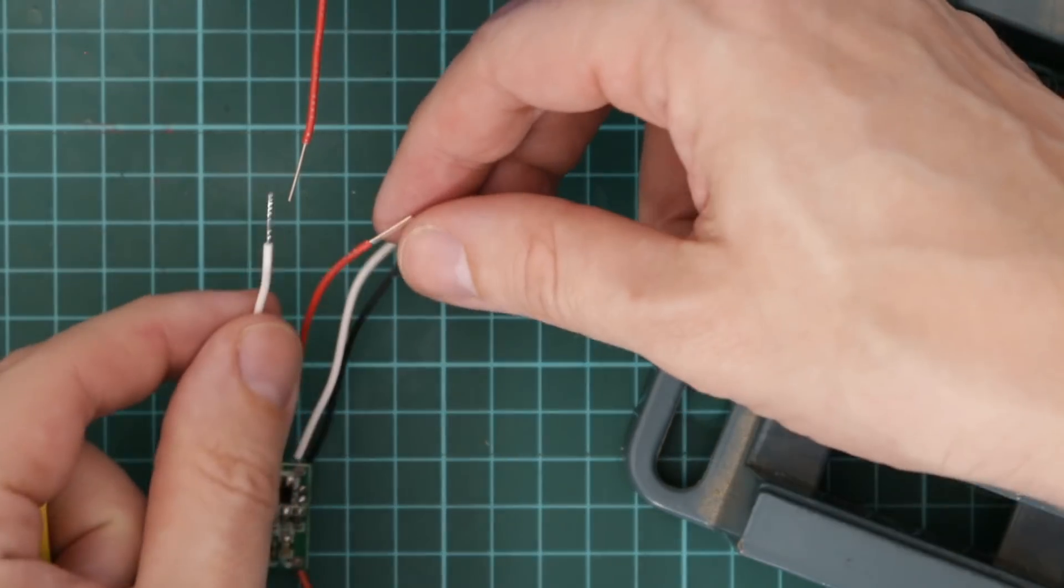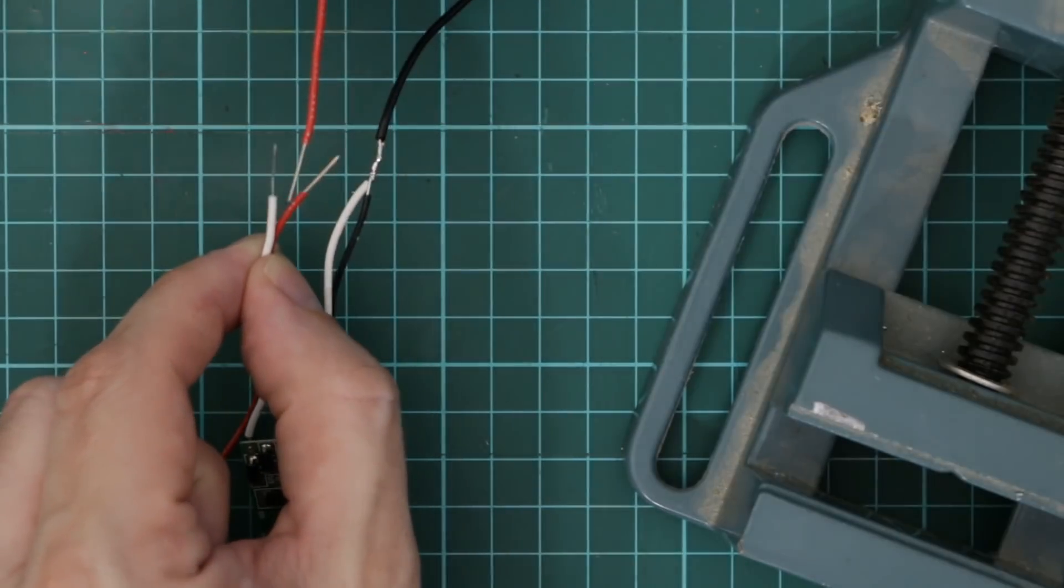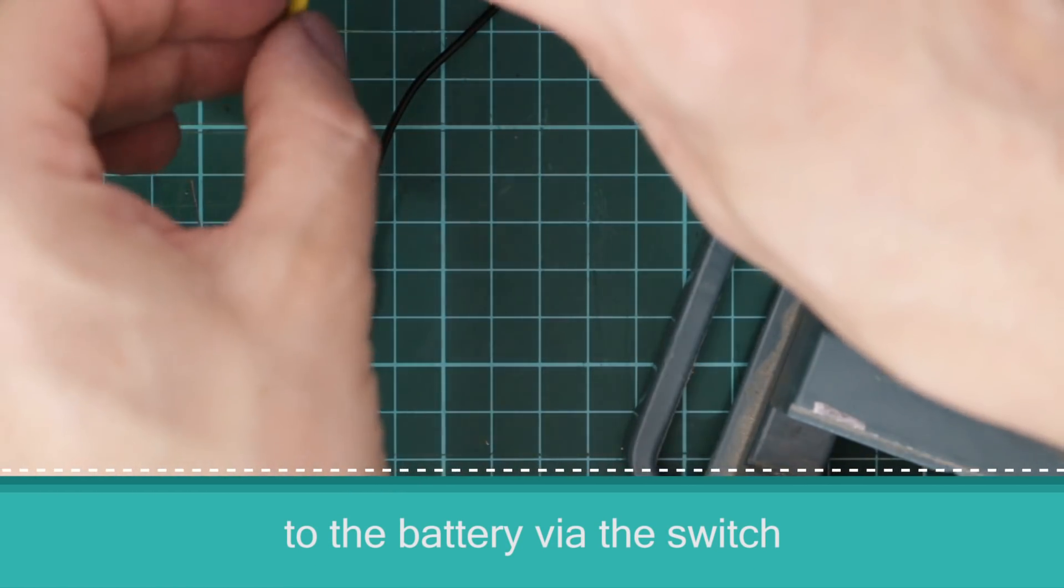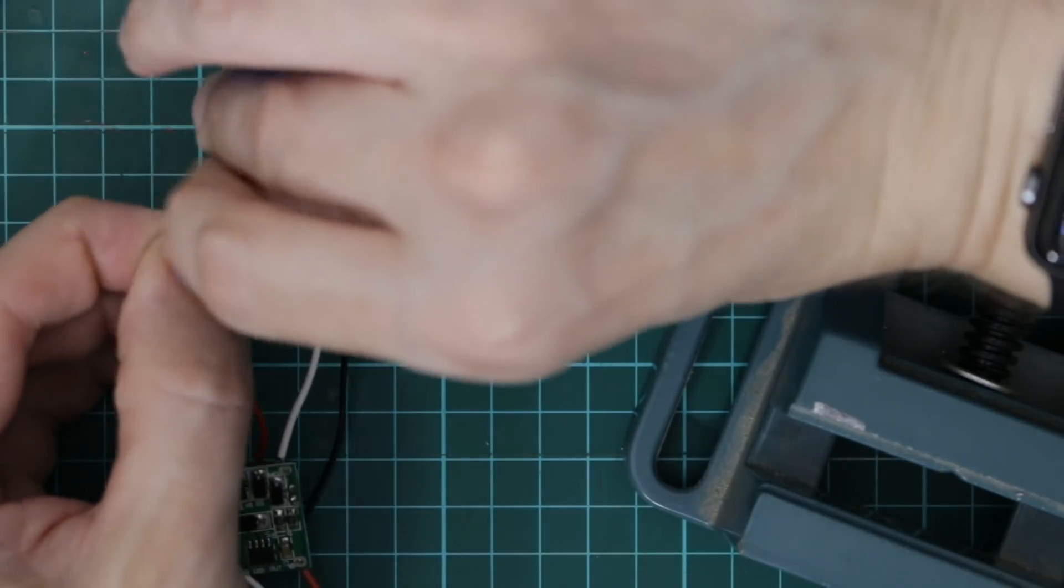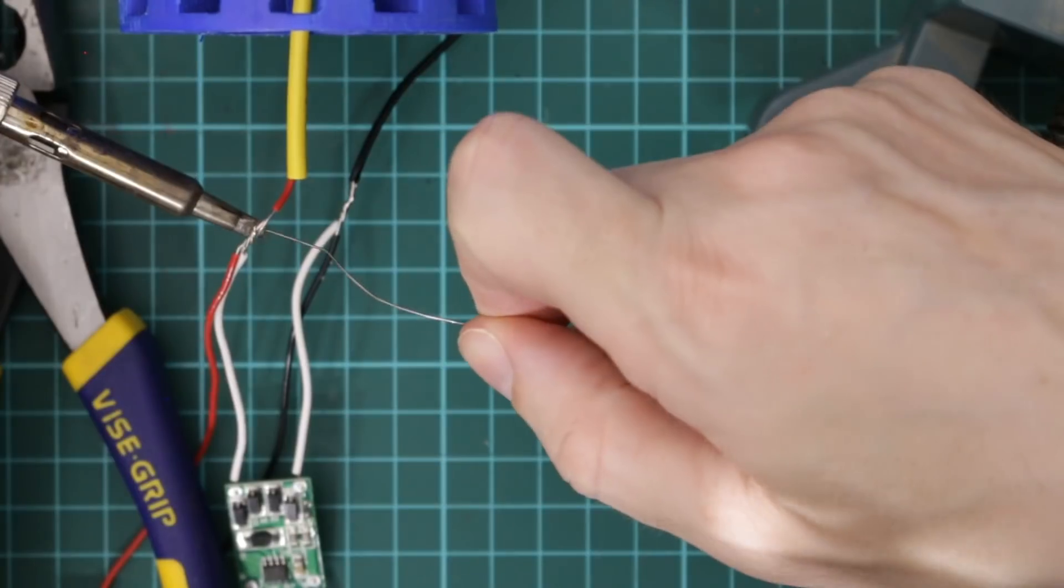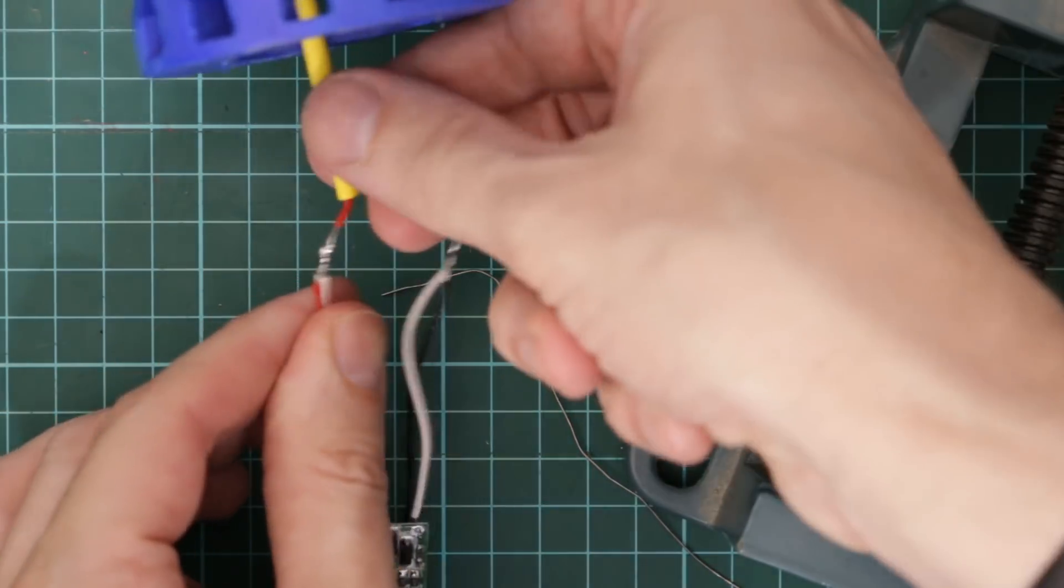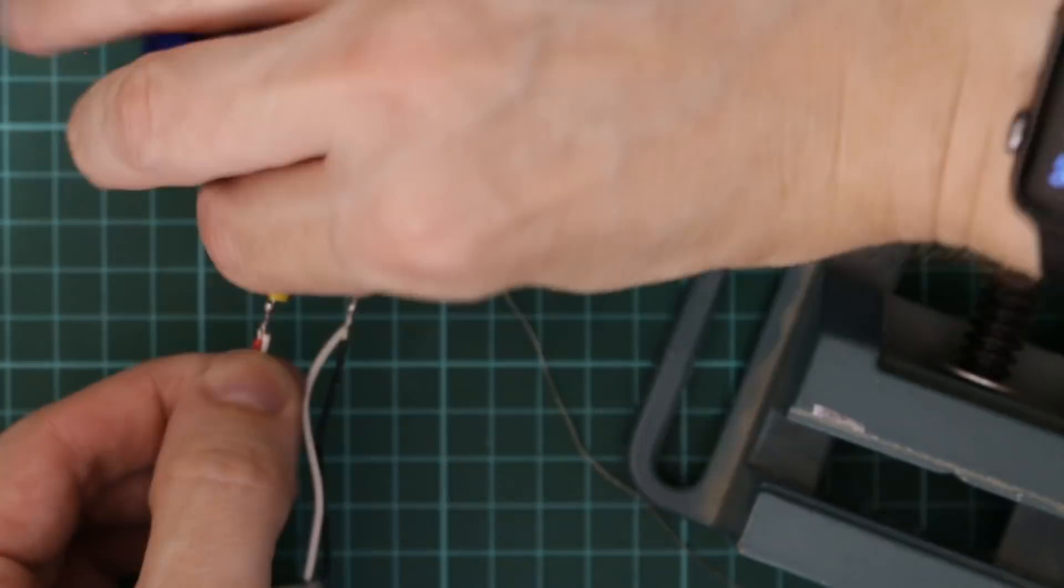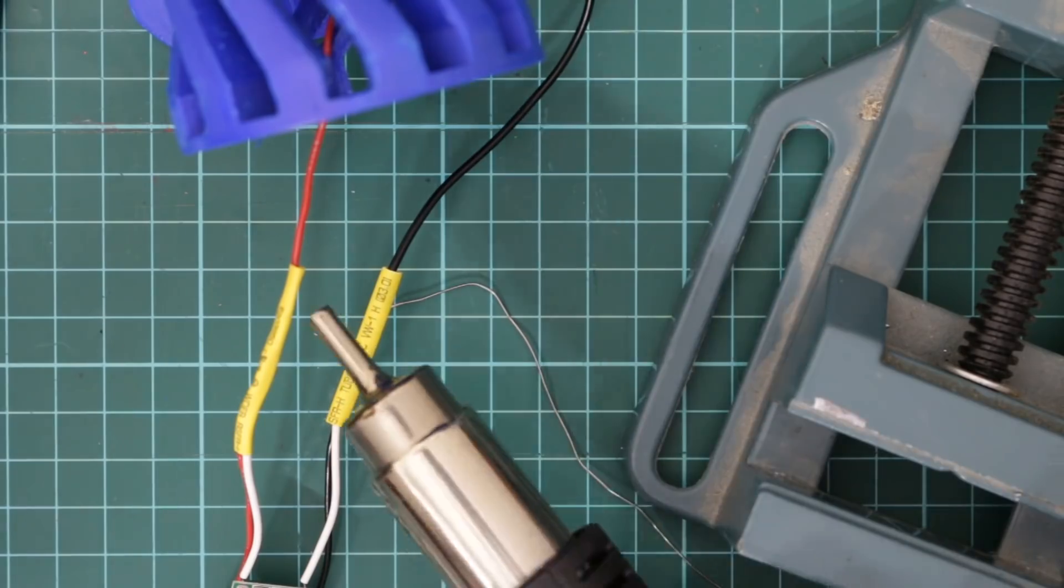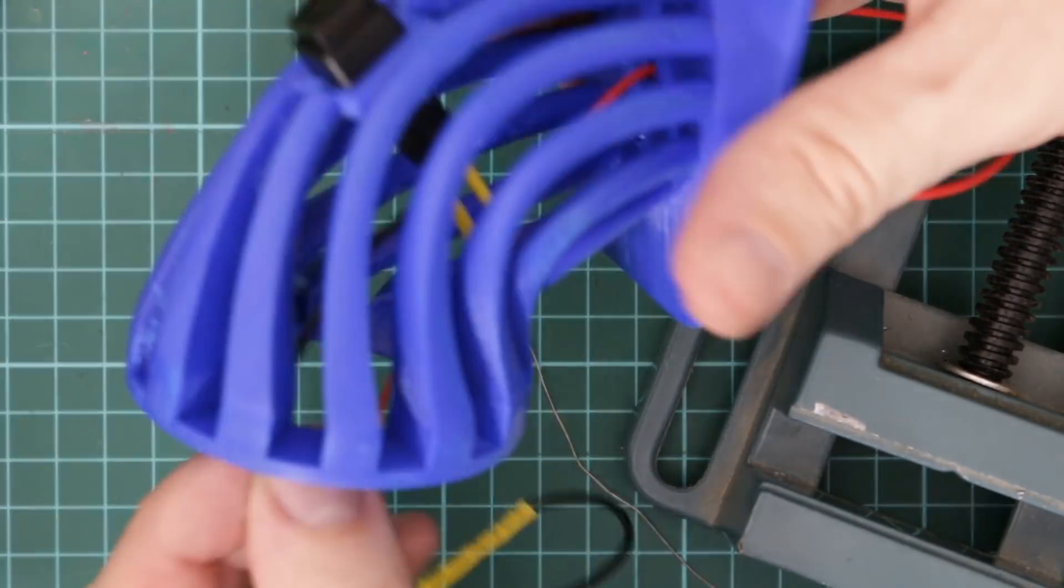So next I'm going to take the lead from the driver, the positive lead from the fan and connect that to the positive lead of the battery. I'm just going to remember and put some heat shrink up onto there first. Then I'll just put the heat shrink over that. Then the negative lead of the battery just goes through that hole in the bottom too.